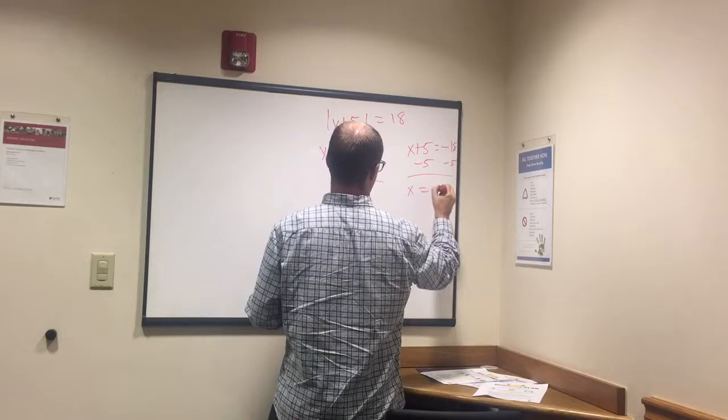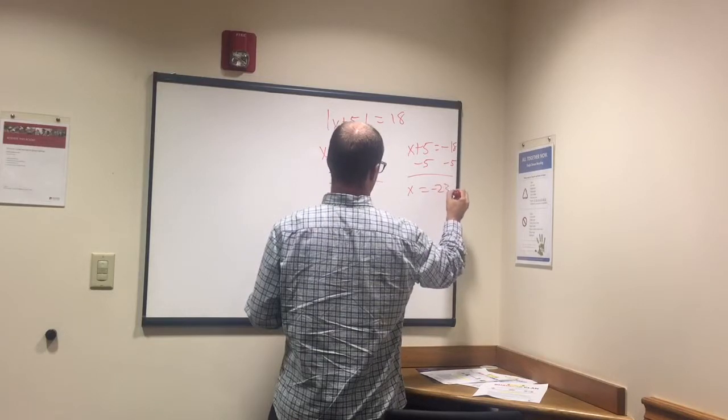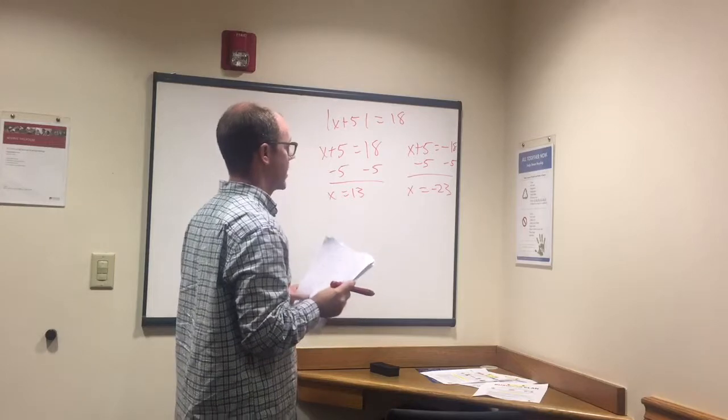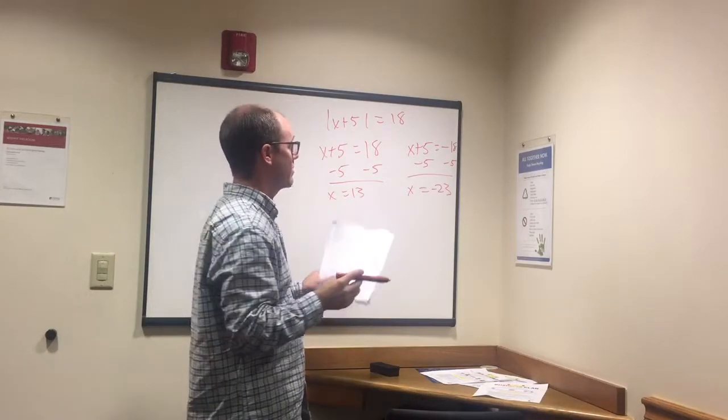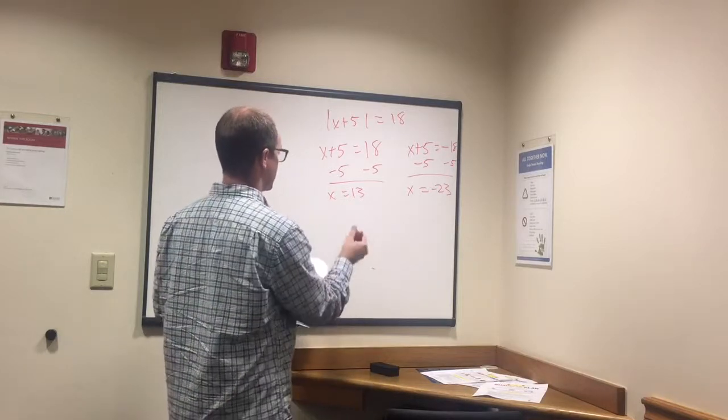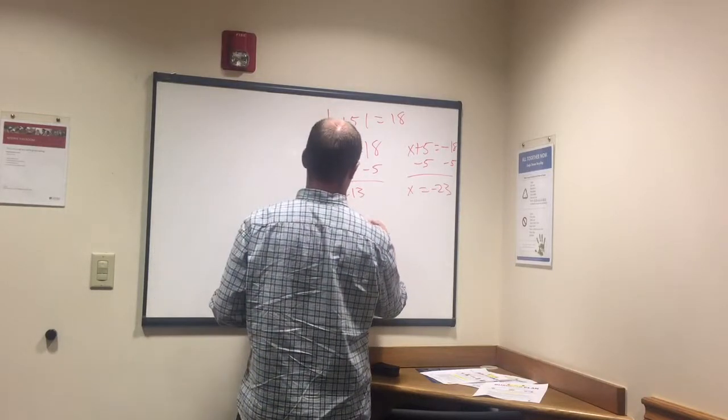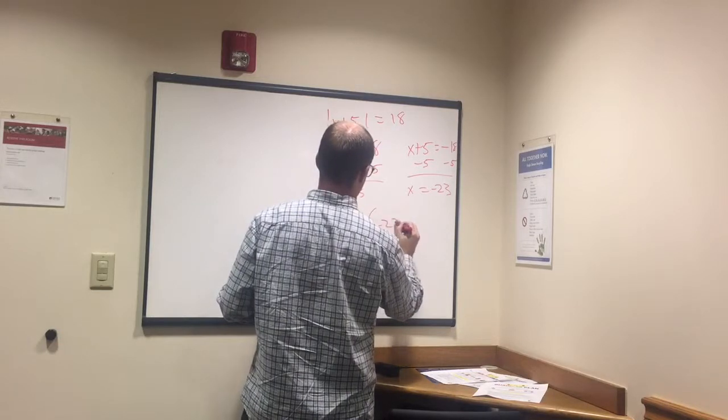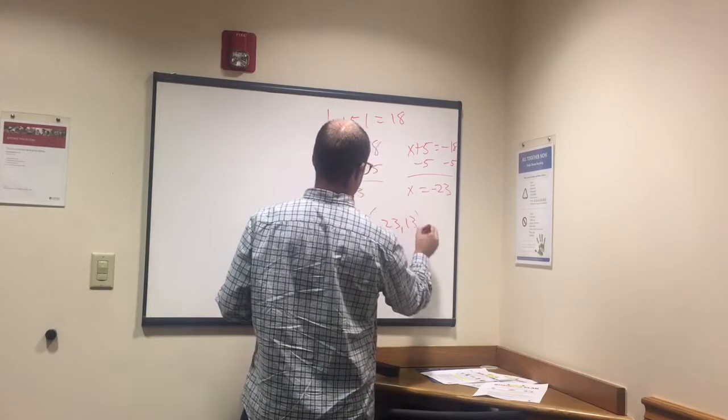Not negative 13. 18 minus 5 is 13, but negative 18 minus 5 is negative 23. So then you'll see x equals negative 23 or 13. That's what your answer will look like.